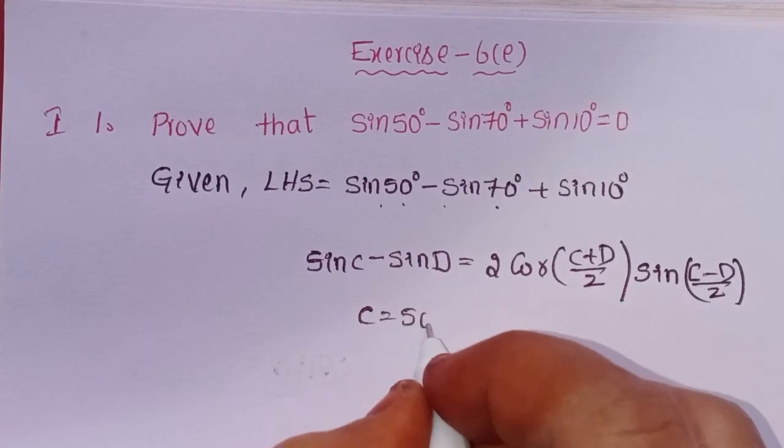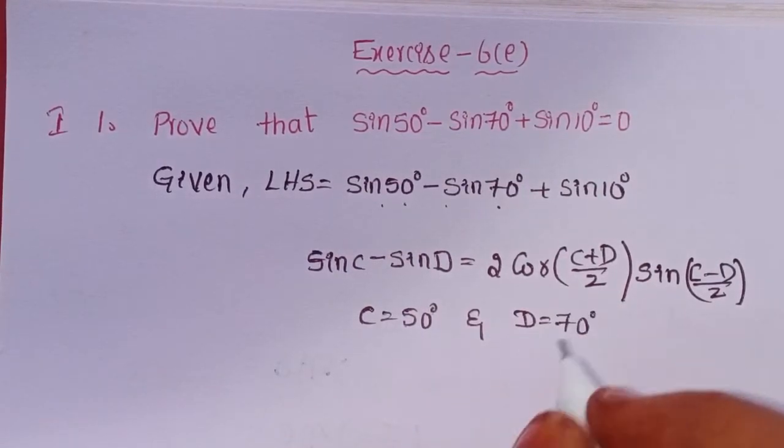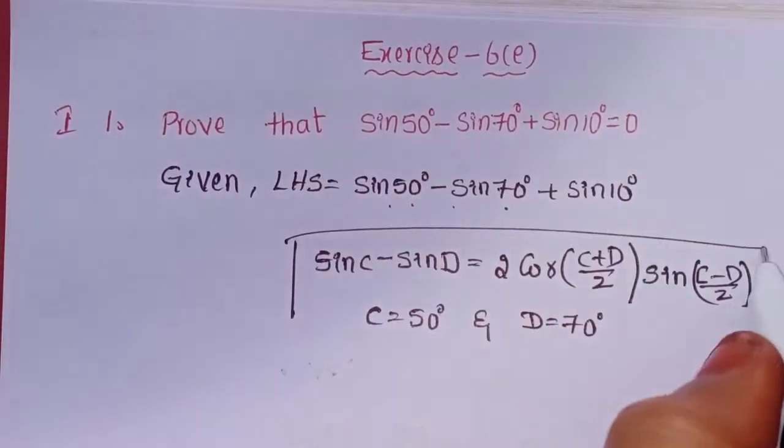Here C means 50 degrees and D means 70 degrees. This is the formula.